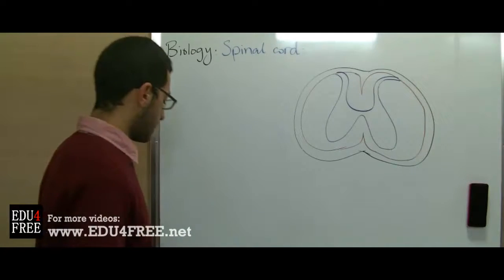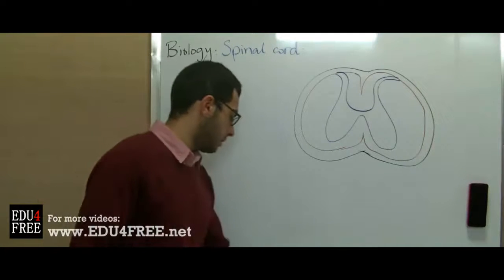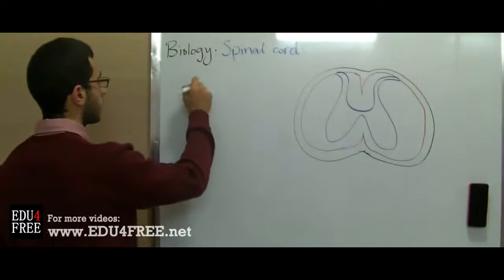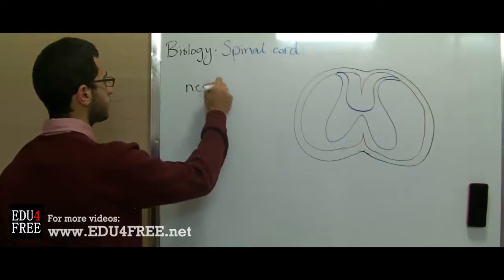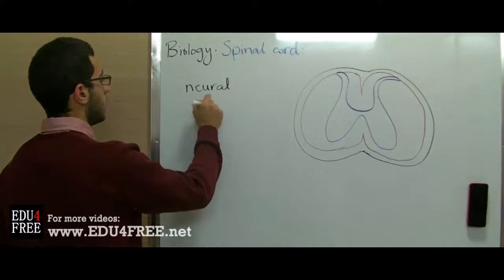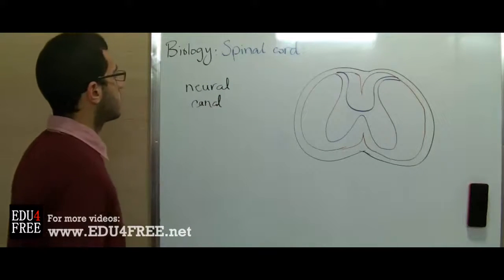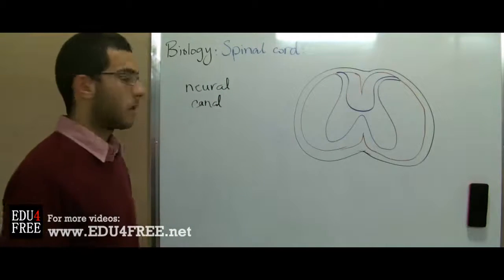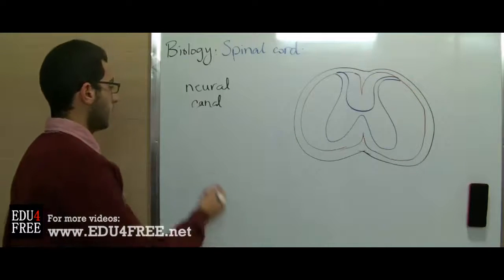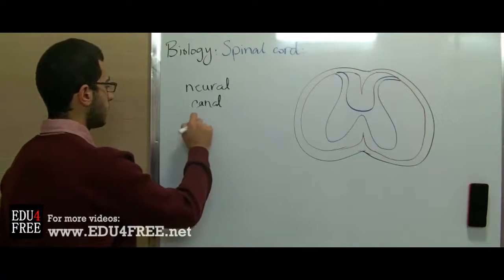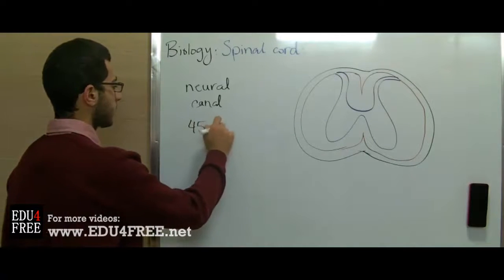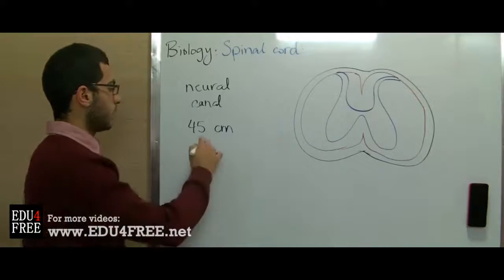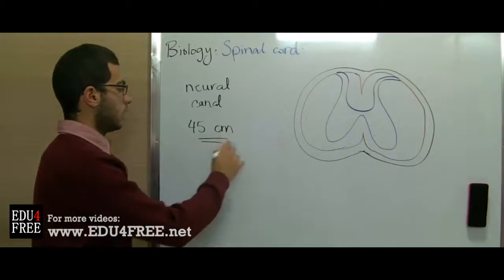The spinal cord extends inside the vertebral column in a canal called the neural canal, and it extends through this canal for a length of about 45 cm. So the spinal cord is about 45 cm long.